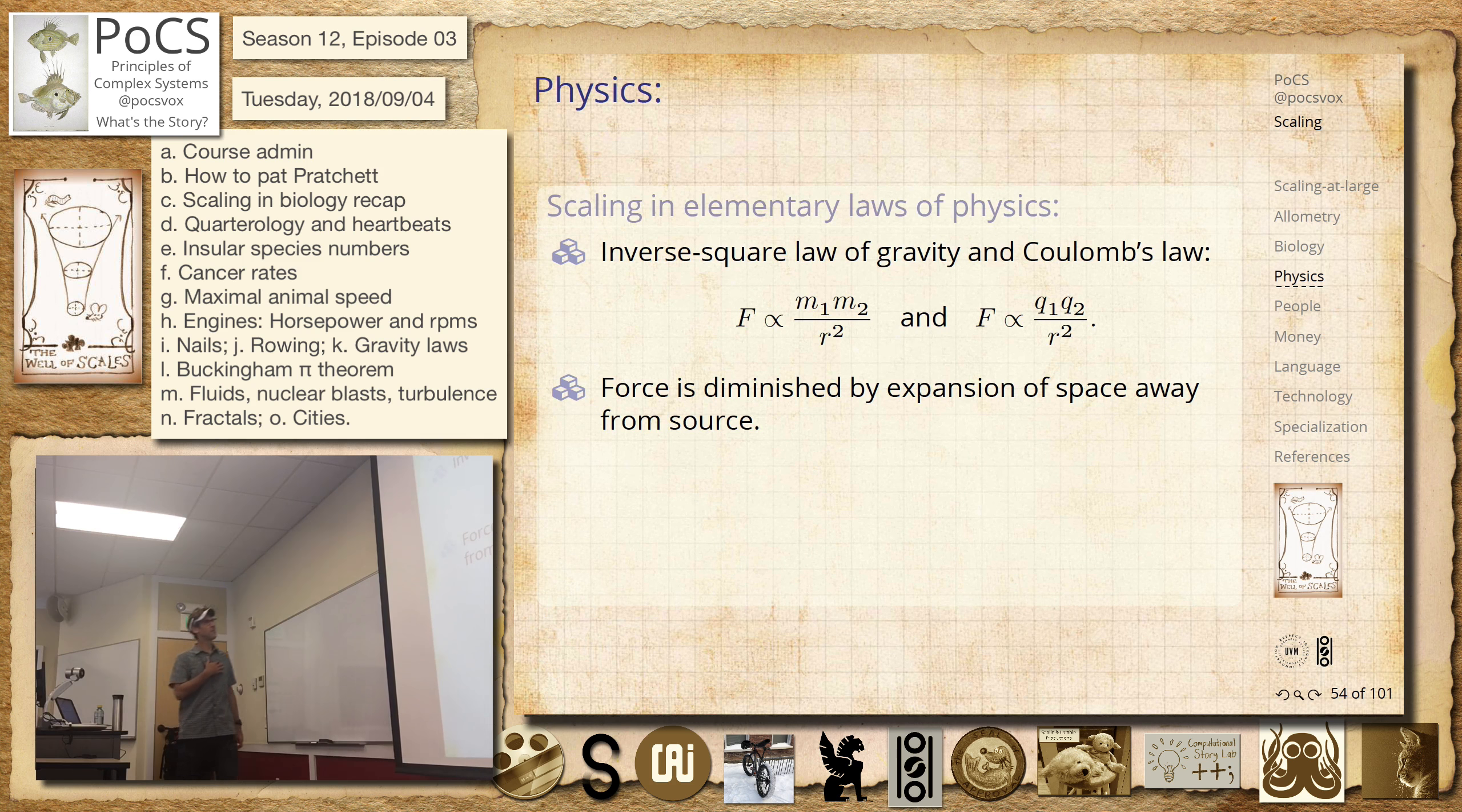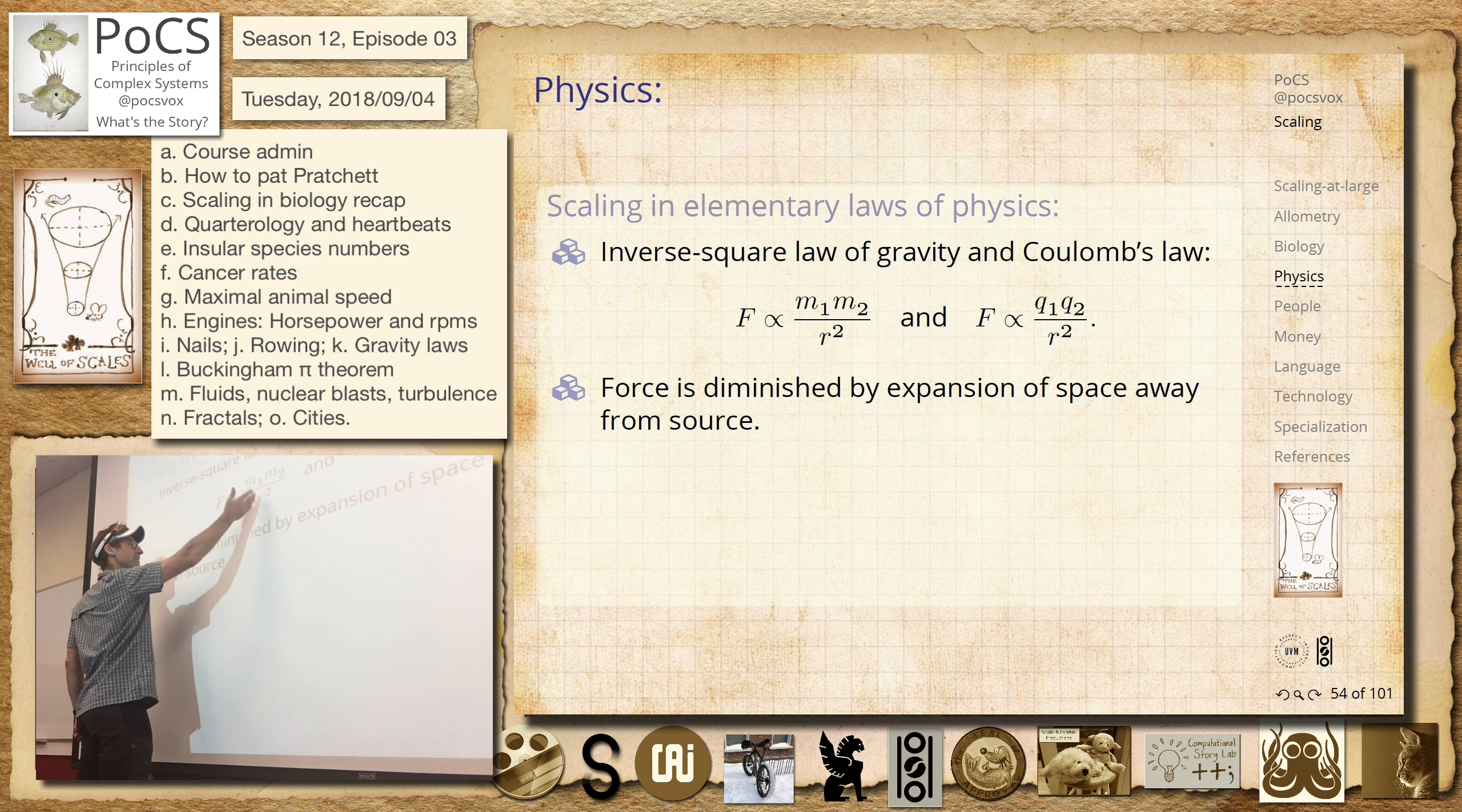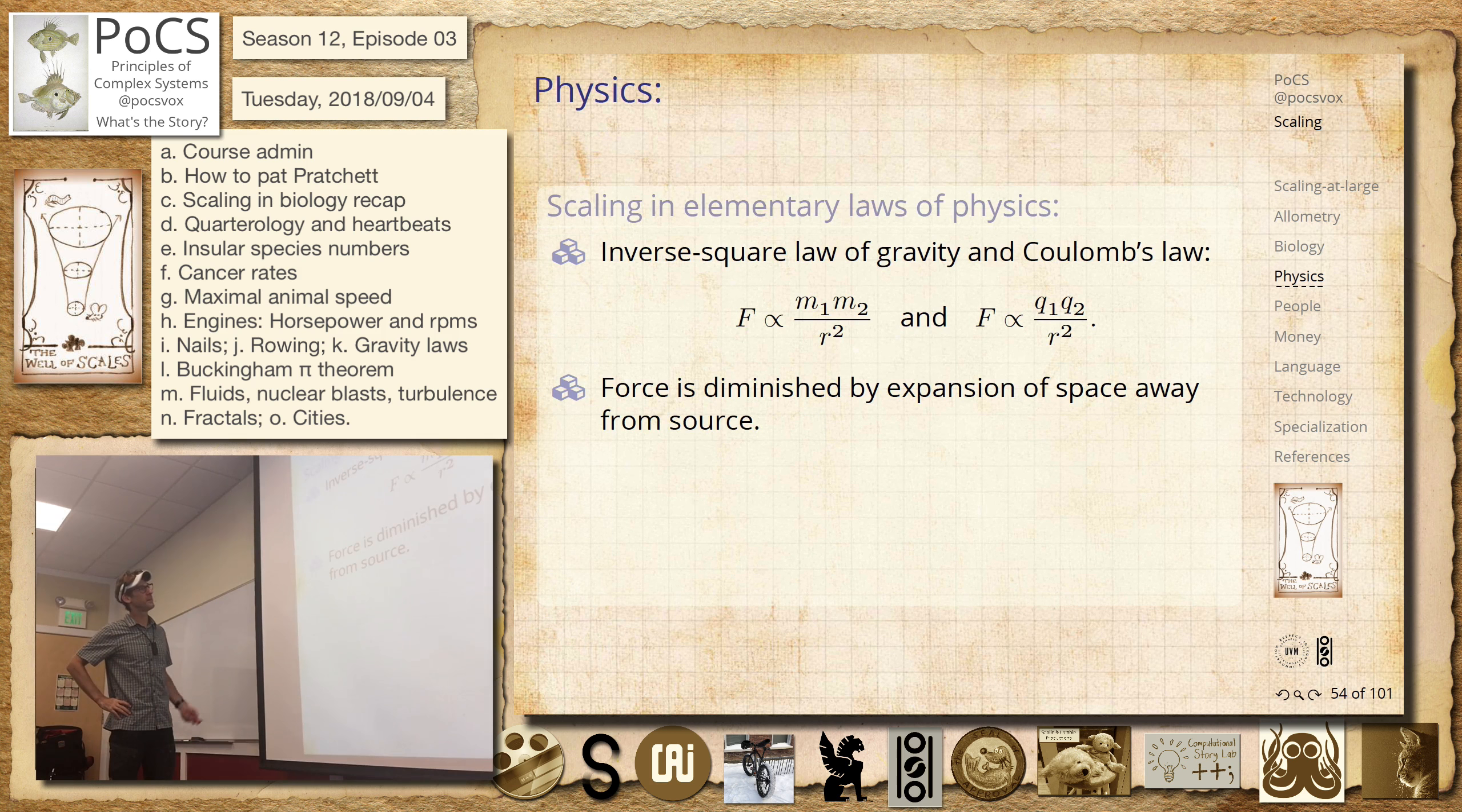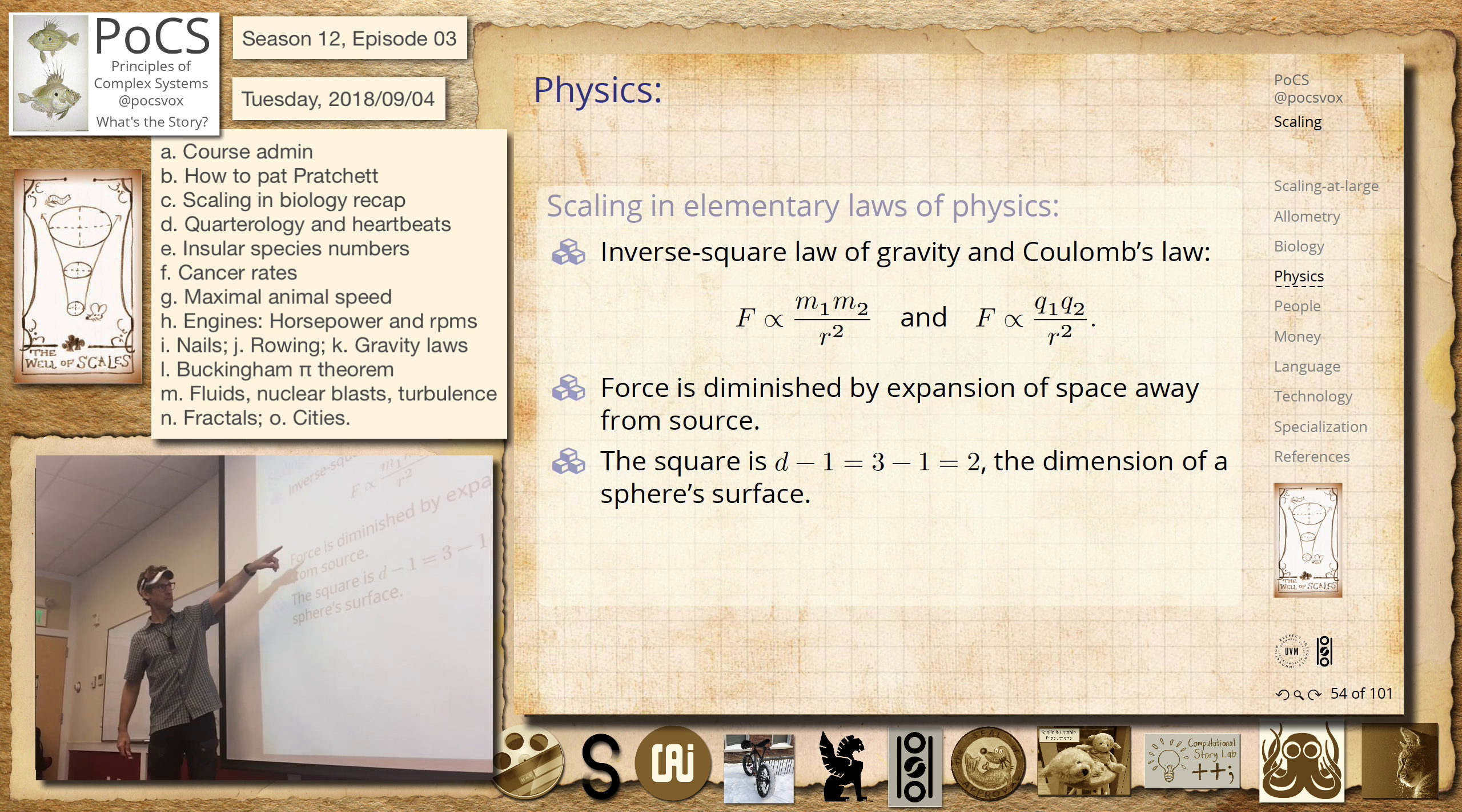These are really fundamental things. Of course, this is a phenomenological piece, right? This works. We need to have general relativity to improve on it, but we just have it. So this is the dimension of a sphere surface, right? So that's that one over r squared. It's sitting there. It makes some sense.